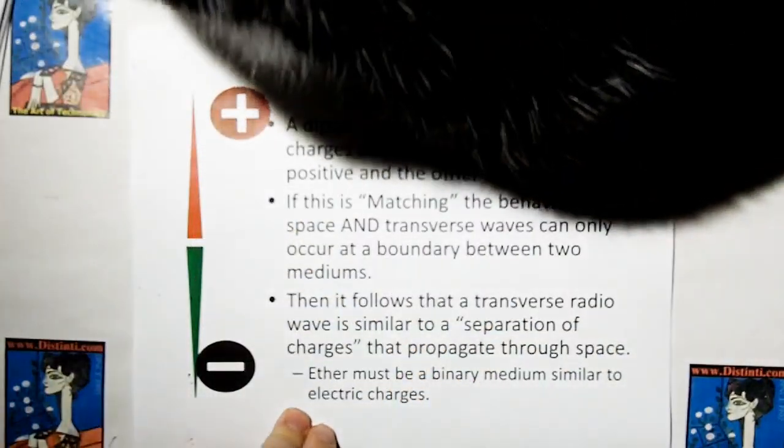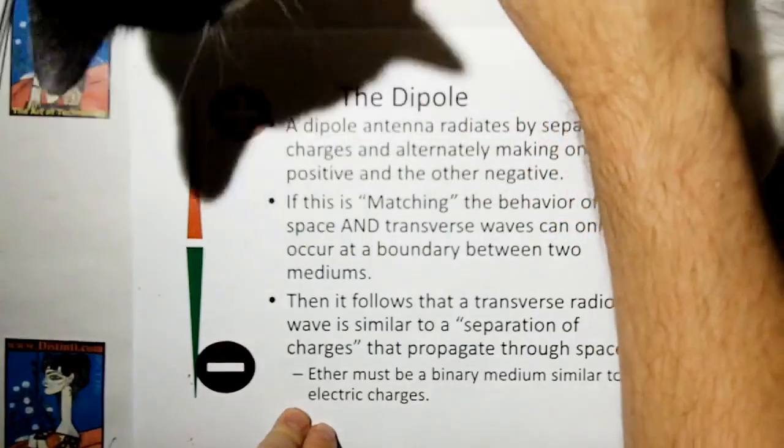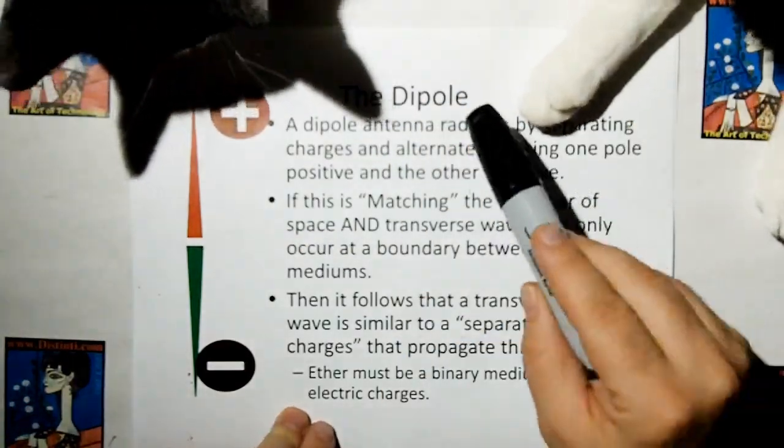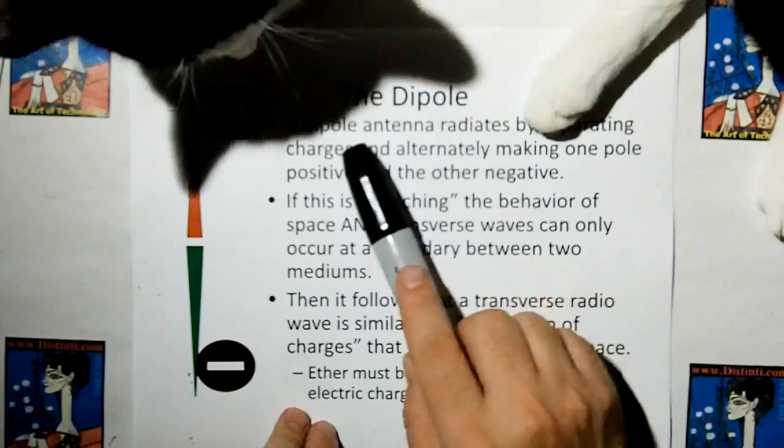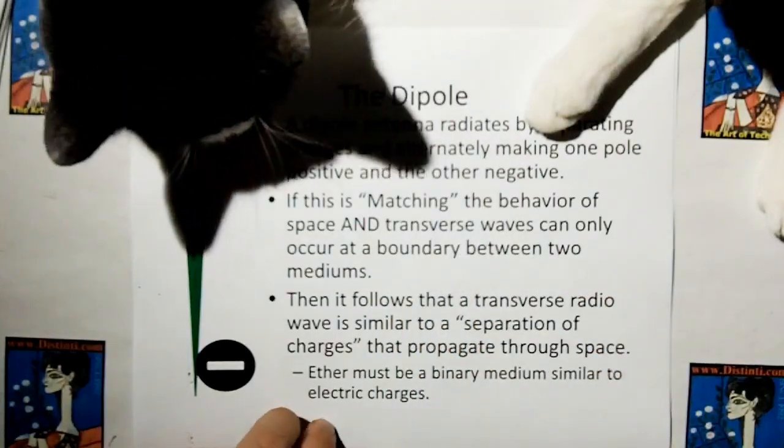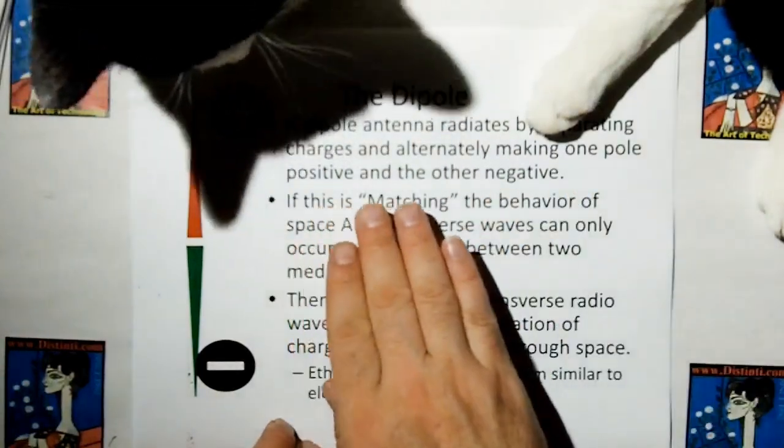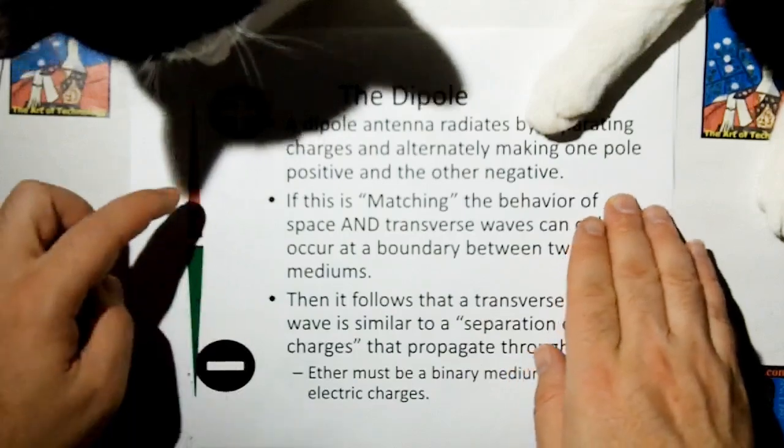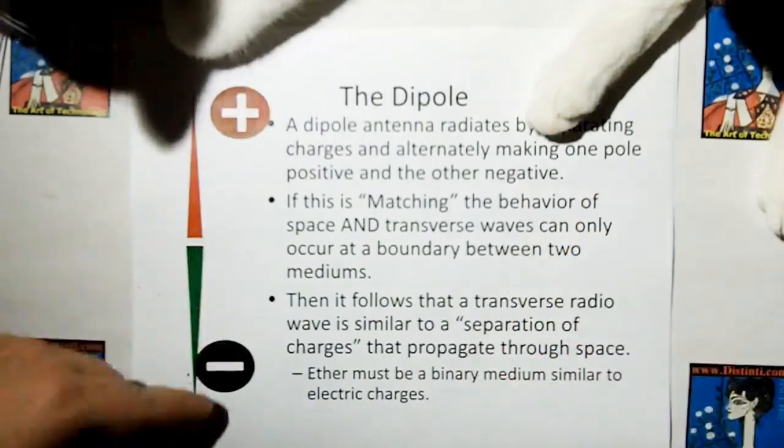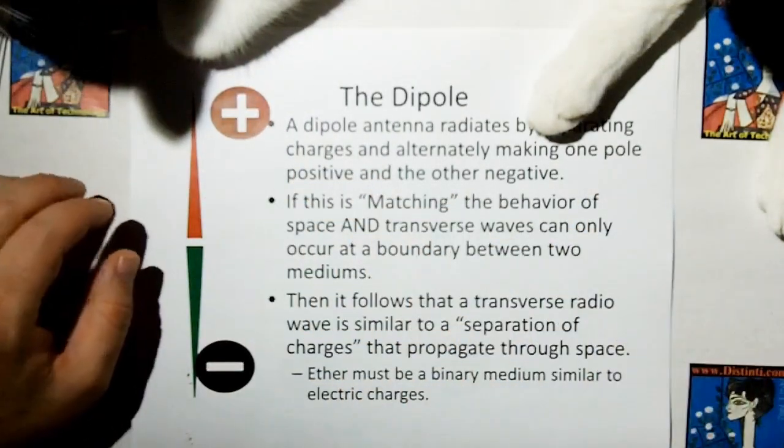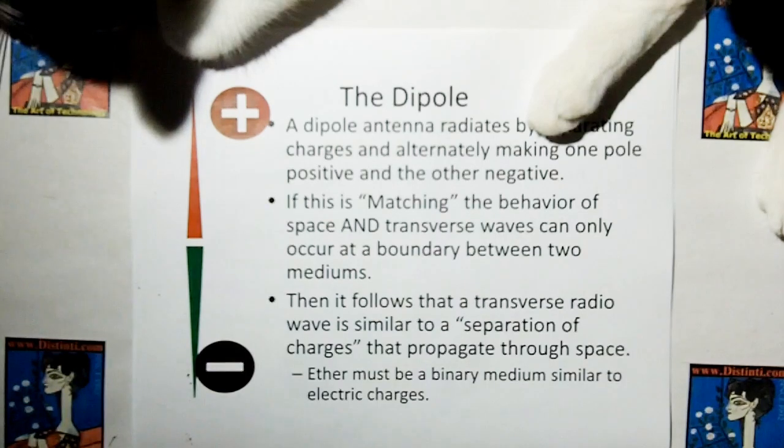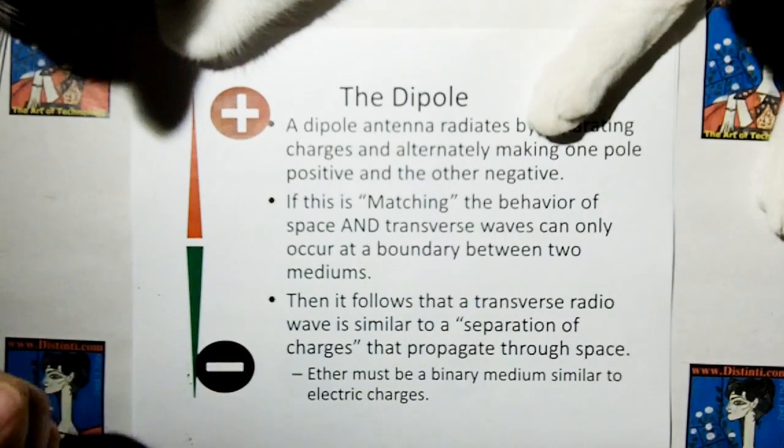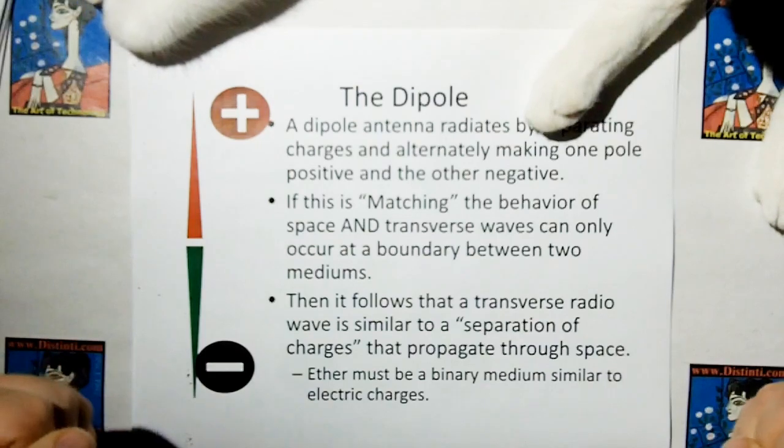So, how do we match energy into air, into space? Well, we use a dipole antenna. And a dipole antenna radiates by separating charges and ultimately making one pole positive and the other one negative and then switching it back and forth. If this is matching the behavior of space, and transverse waves can only occur at a boundary between two mediums,